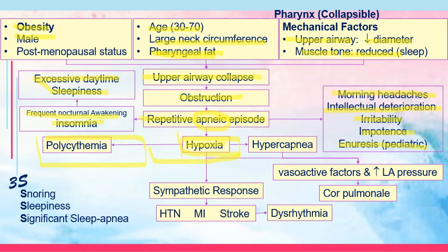Because of decreased oxygen to the kidney, the kidney perceives the need for additional red blood cells and releases erythropoietin, which targets the bone marrow to manufacture additional red blood cells. However, in conditions like obstructive sleep apnea this process tends to be rushed, so the patient has polycythemia — many red blood cells that are immature. With hypoxia and hypercapnia combined, it can result in vasoactive factors and increase left atrial pressure, also increasing pulmonary pressure.